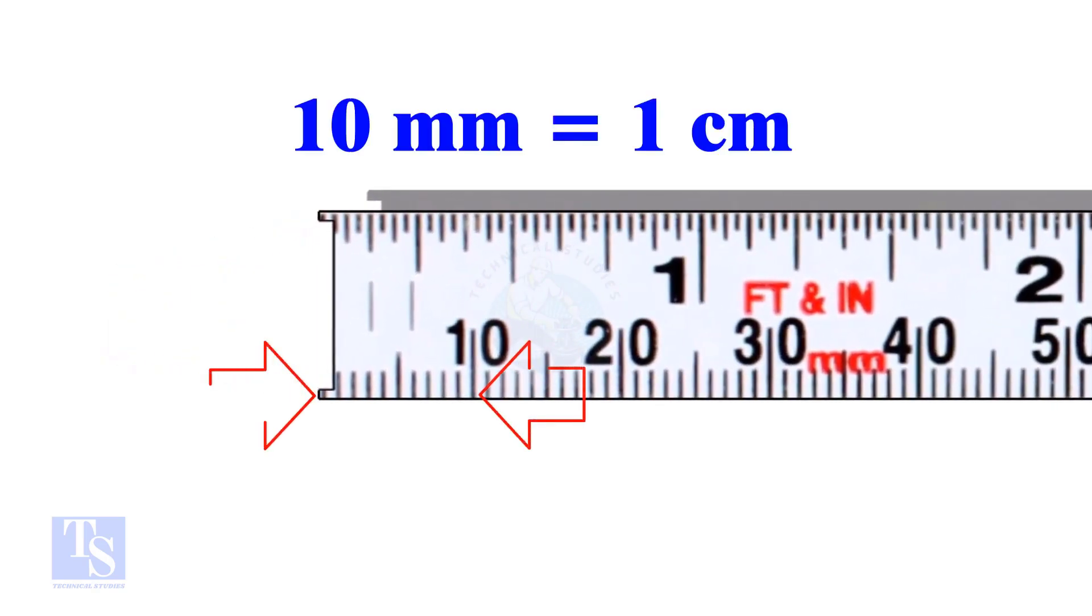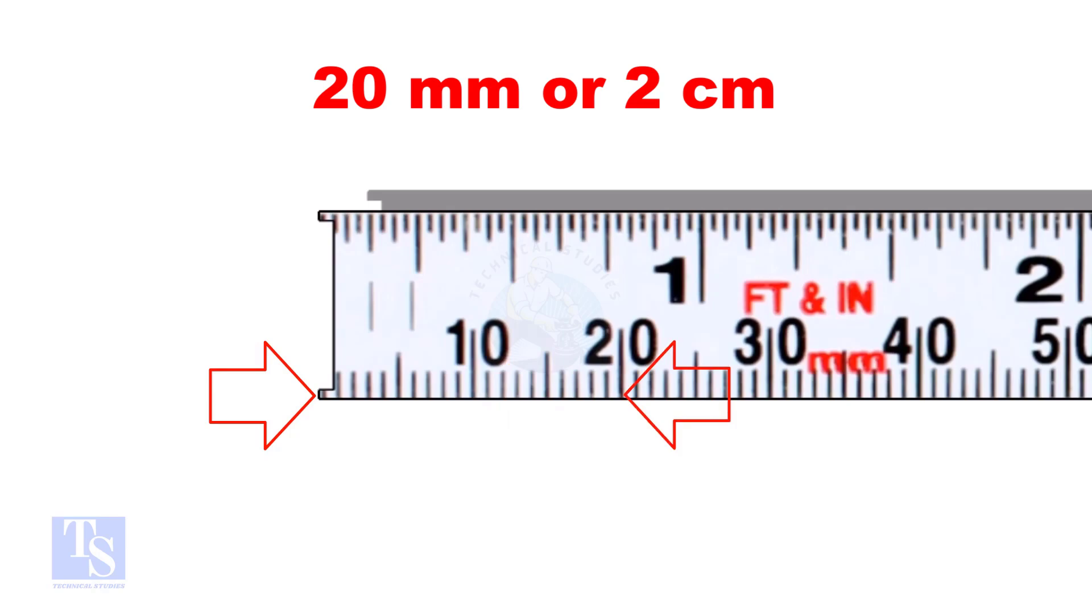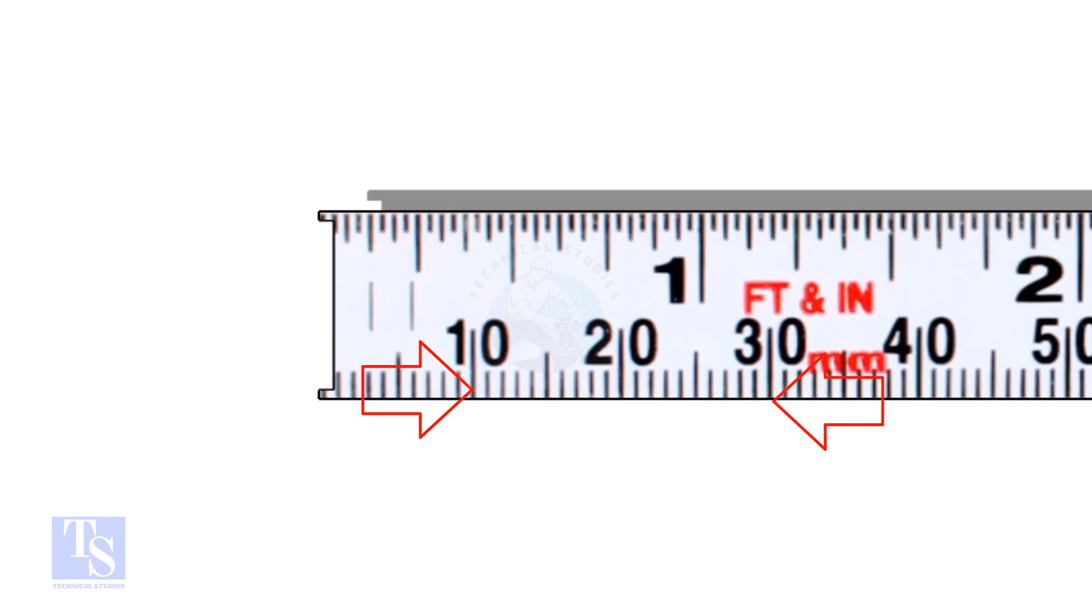From here to here, it is 10 millimeters or 1 centimeter. This is 20 millimeters or 2 centimeters. What is the distance from here to here? That is 30 minus 10 is equal to 20 millimeters.